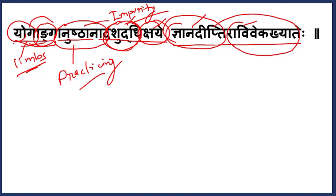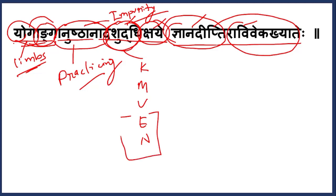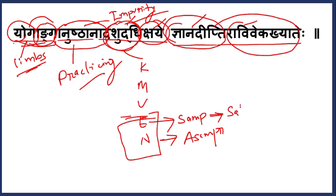In the first Patanjali Yoga Sutra, I discussed regarding the chitta and chitta bhumis. There are five chitta bhumis: Ksipta, Mudha, Viksipta, Ekagra, and Niruddha. These two — Ekagra and Niruddha — come under Samadhi. Ekagra is related to Samprajnata Samadhi and Niruddha is related to Asamprajnata Samadhi. In Samprajnata (Ekagra) state, Sattva guna will be predominant, whereas in the Niruddha (Asamprajnata) state there is no guna — it is beyond the gunas.